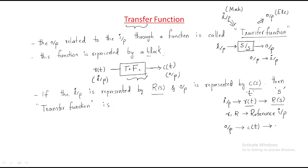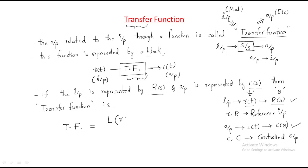The output is generally represented as c(t), or if transformed it becomes capital C(s). Small c and capital C is called the controlled output. We are controlling the output using some factors — that's why we discuss control systems. So the input is taken in terms of r and output in terms of c. The transfer function formula is: Laplace transform of output divided by Laplace transform of input, with one condition — initial conditions become zero.